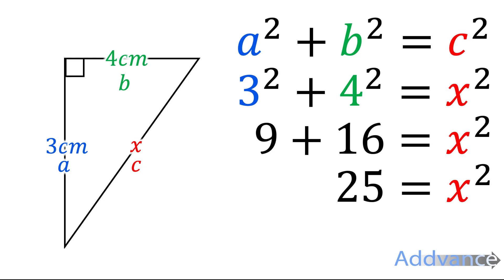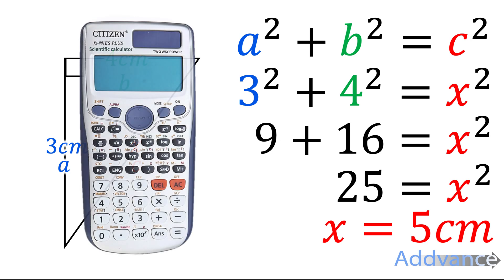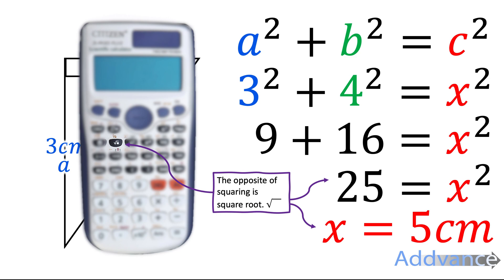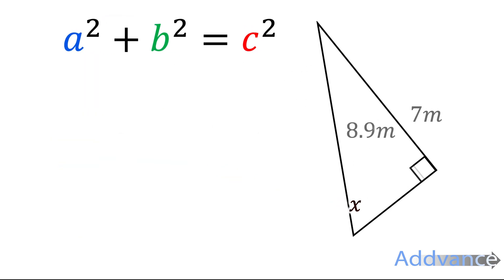So what do you think X is? Well, you should know that the square root of 25 is 5, so X is 5 centimetres. On your calculator, you can use this button here, and the square root button to find the opposite of squaring something. So square root of 25 is 5, and we know that is 5 centimetres.